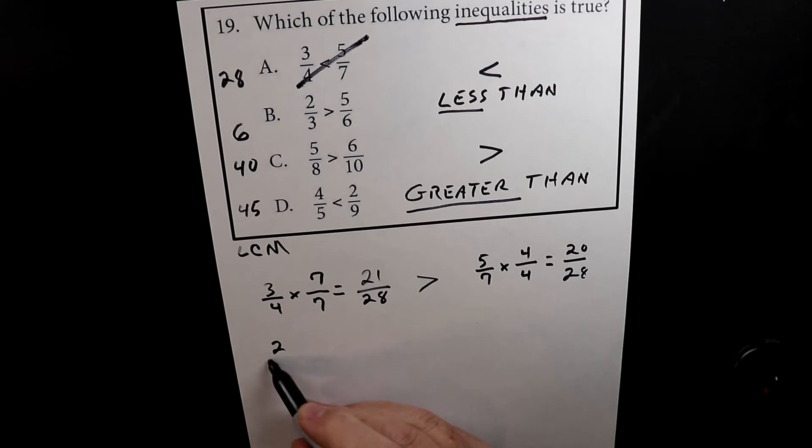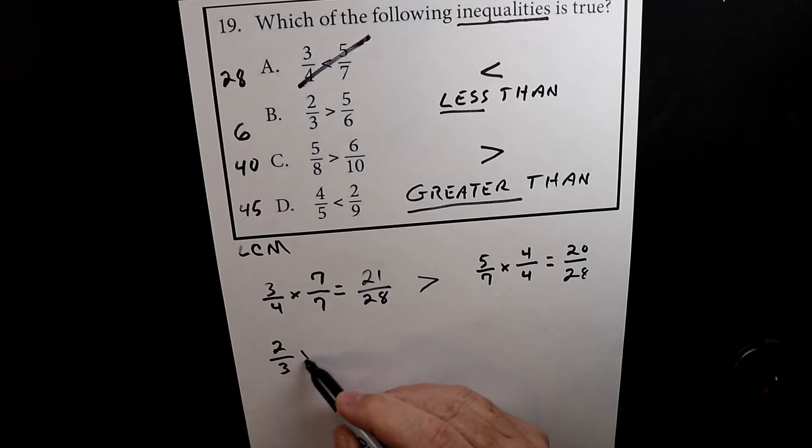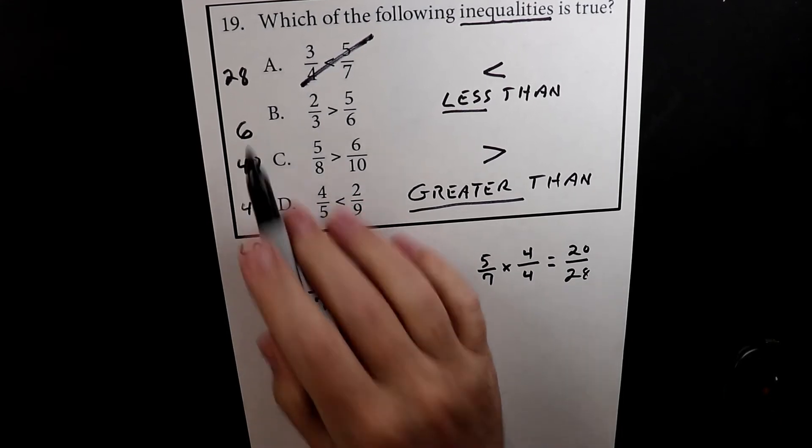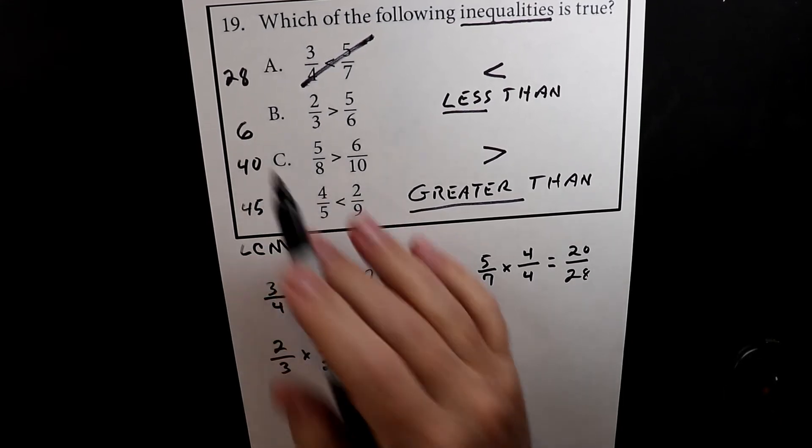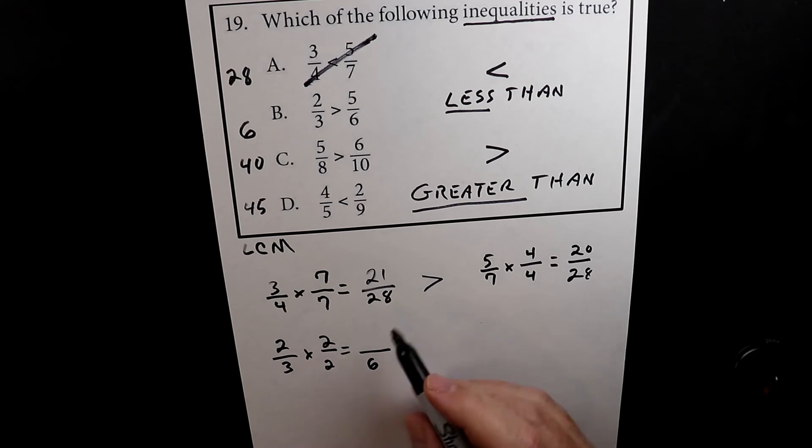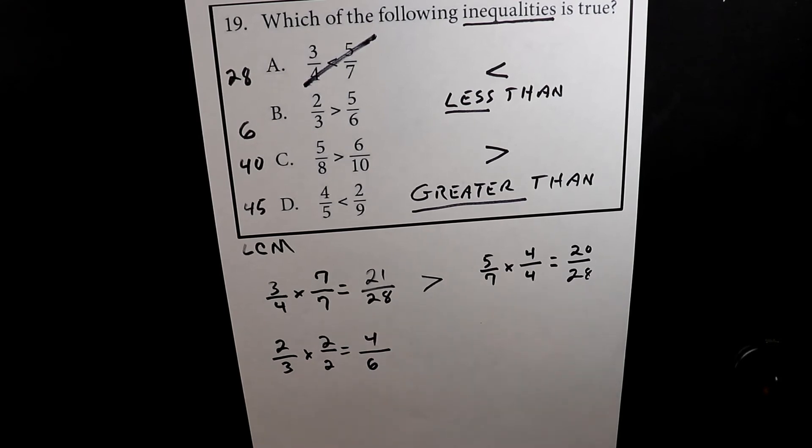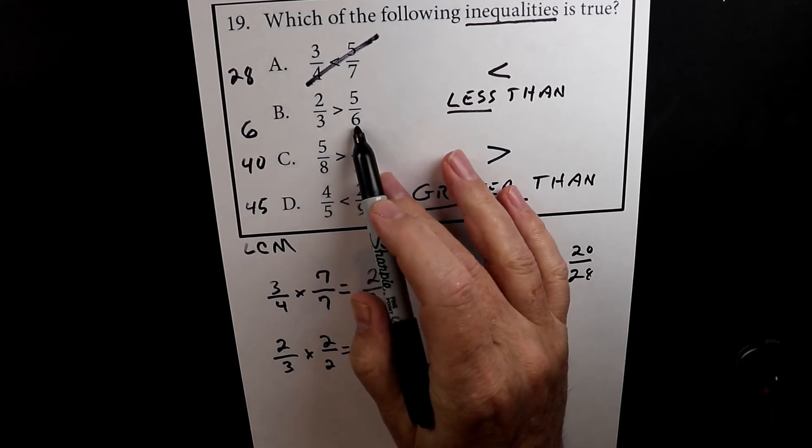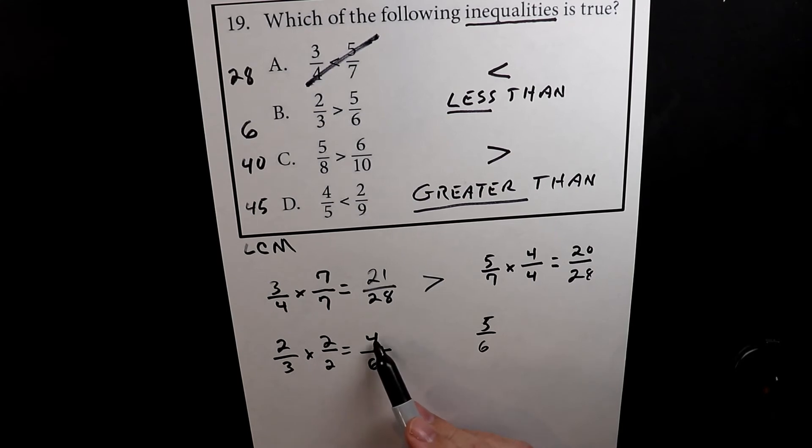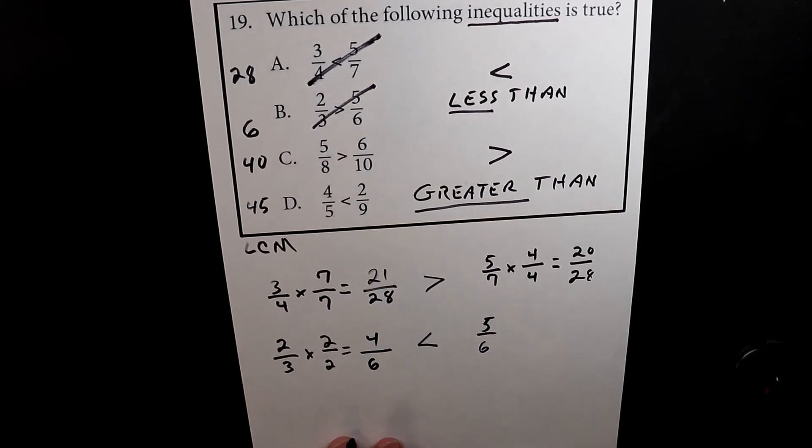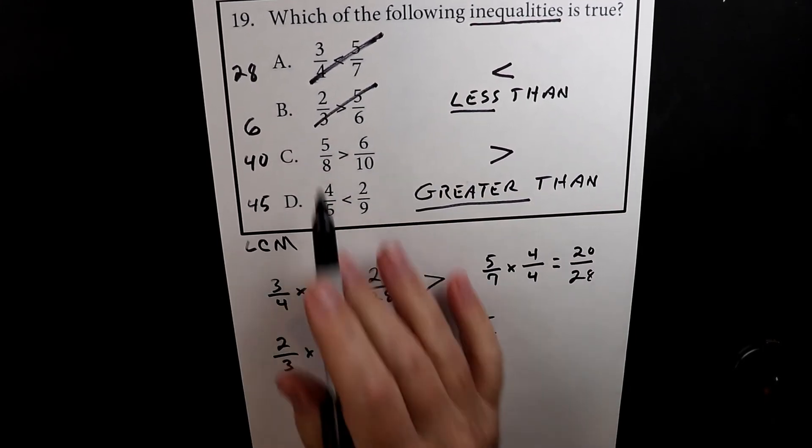So let's look at the next one. So now we have 2 over 3 times 2 over 2, because we're going to have to turn this 3 into a 6. So 3 times 2 is 6, 2 times 2 is 4. On this side, we don't have to do anything because it's already done, because the denominator is already 6. So 4 over 6 is less than 5 over 6. So here we can see that this one is not right.